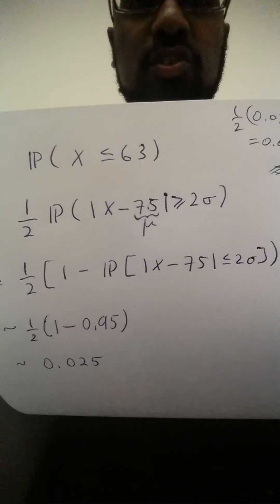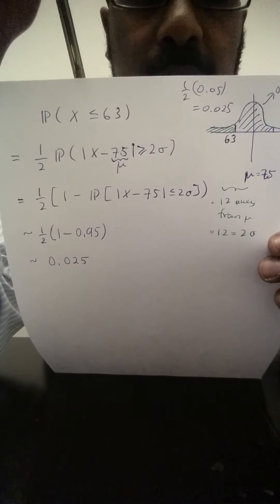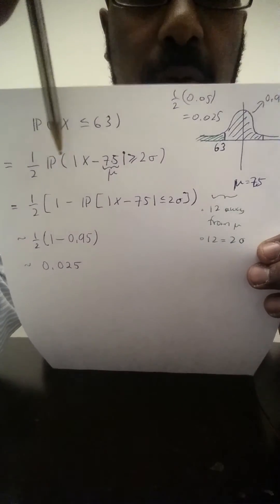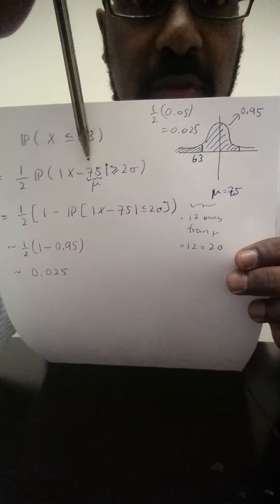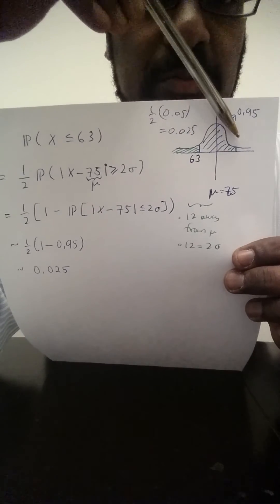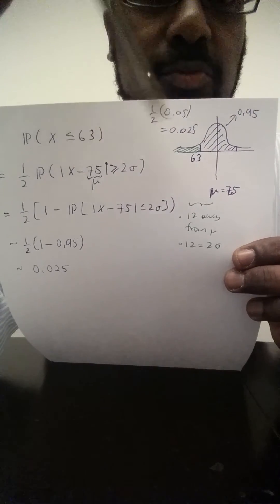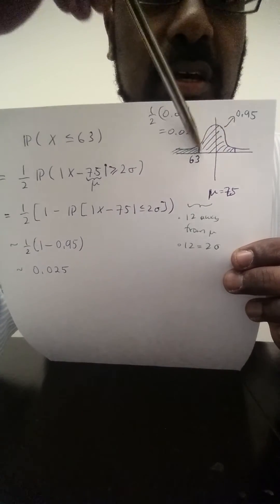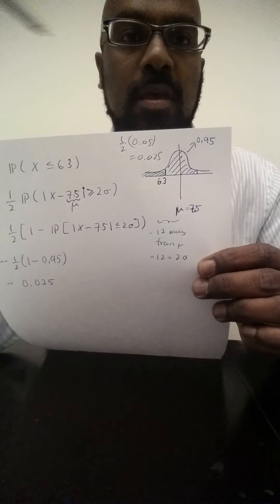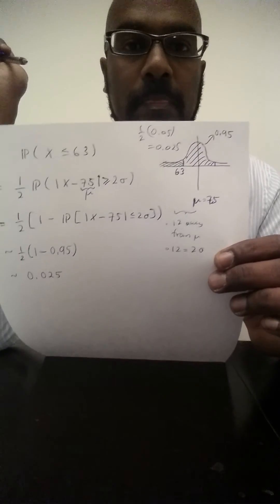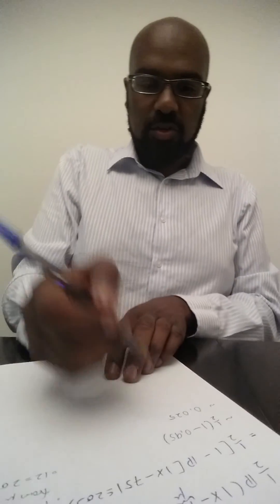So again to recap, we're interested in the probability that X is at most 63. This is one half the probability that we are at least two standard deviations away from the mean. That's this green region plus this corresponding region over here, and we can figure that out by subtracting off this bulk of the distribution here, which is everything within two standard deviations of the mean, and we know what that is by our rule of thumb. And so we get a total approximation of roughly 0.025.